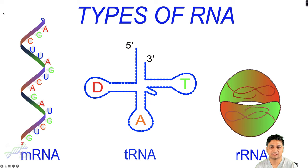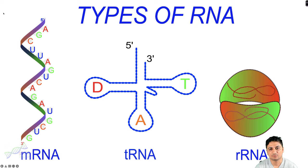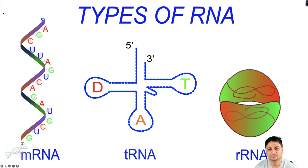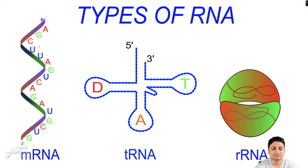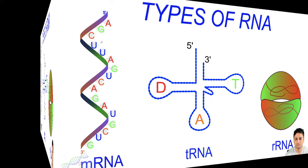Hello everyone, welcome back to my channel, this is Saroj Parajuli. Today we are going to talk about the different types of RNA. In the last two videos we talked about the structure and composition of RNA and also on the stability of RNA. If you want to watch those two videos, I have provided the link in the description section. Basically there are three different types of RNA, and I'll also include some other types of RNA involved in the regulatory process.